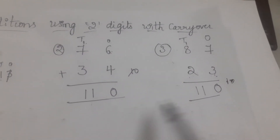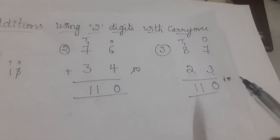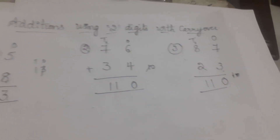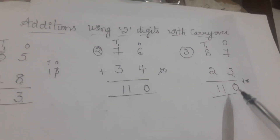Here also the answer is the same — these two answers are the same. Eighty-seven plus twenty-three also equals 110.